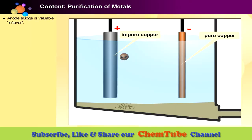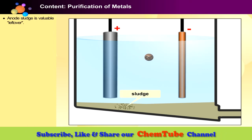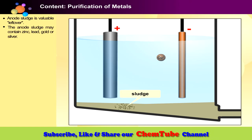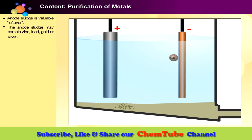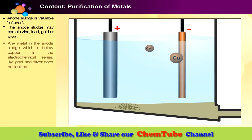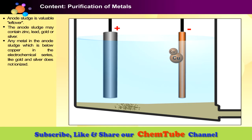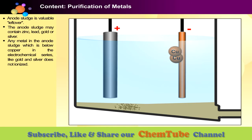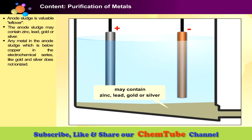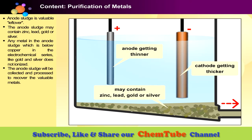Anode sludge is a valuable leftover. For example, the impurities from the copper anode include lead, zinc, arsenic, and several precious metals including gold and silver. Any metal in the anode sludge which is below copper in the electrochemical series, like gold and silver, does not ionise. But the anode sludge will be collected and processed to recover the valuable metals.